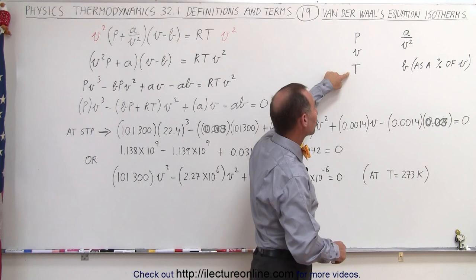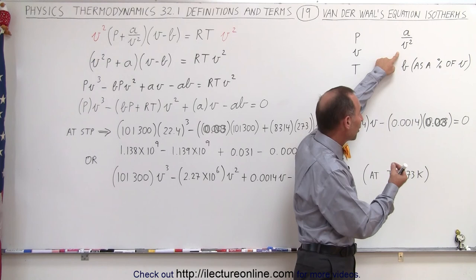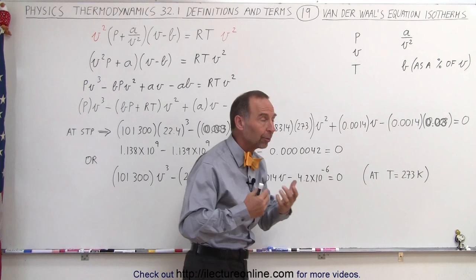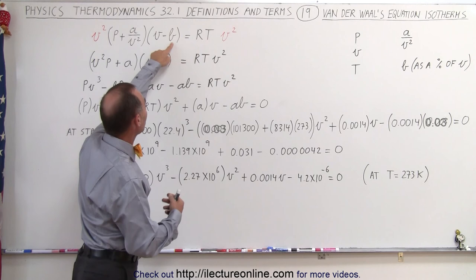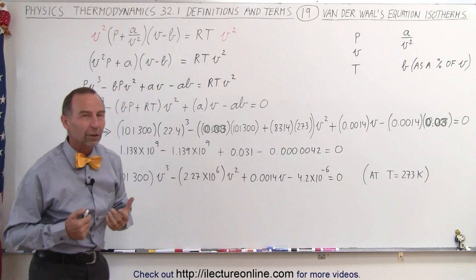Keep in mind that pressure, volume, and temperature can all vary, and that also means that A divided by V squared is actually a variable quantity. B as a percentage of the volume is also a variable quantity, because if you look at the quantity V minus B, B becomes important when V becomes very small and insignificant when V is very large.